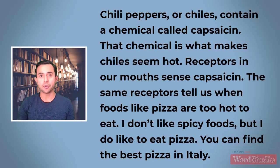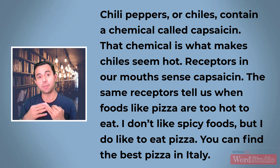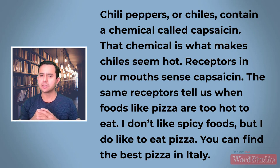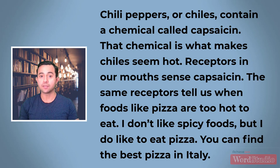So what did you decide? The summary starts out strong. It mentions the chemical called capsaicin that makes chili pepper seem hot. It also explains that receptors in our mouths sense capsaicin. Those seem like important ideas. But then the summary goes off track. The writer includes an opinion: 'I don't like spicy foods, but I do like pizza.' Remember, a good summary does not include your opinion. The summary also says you can find the best pizza in Italy. That's another opinion, and there is no information about Italy in the passage.